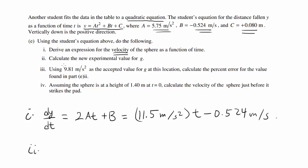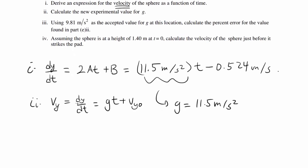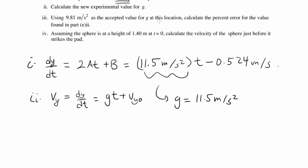Part 2: Calculate the new experimental value for g. The velocity function dy/dt should be in the form gt plus Vy naught. So in our case, g has to be 11.5 meters per second squared, just matching this up. Using 9.81 meters per second squared as the accepted value for g at this location, calculate the percent error for the value found in part E2.